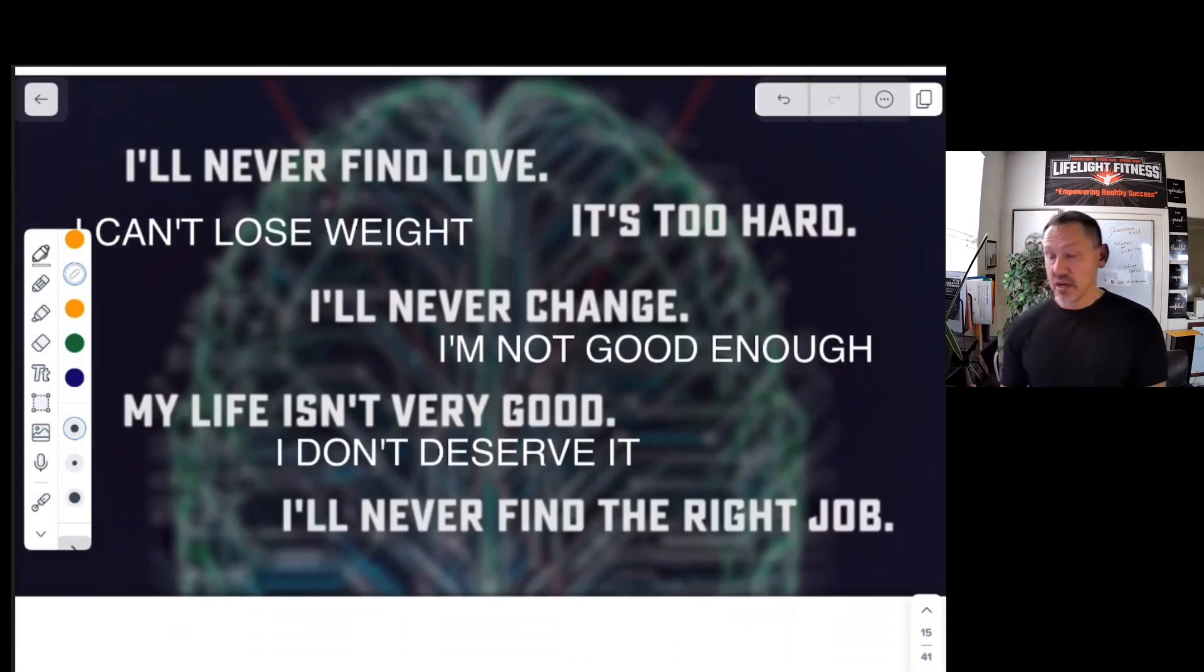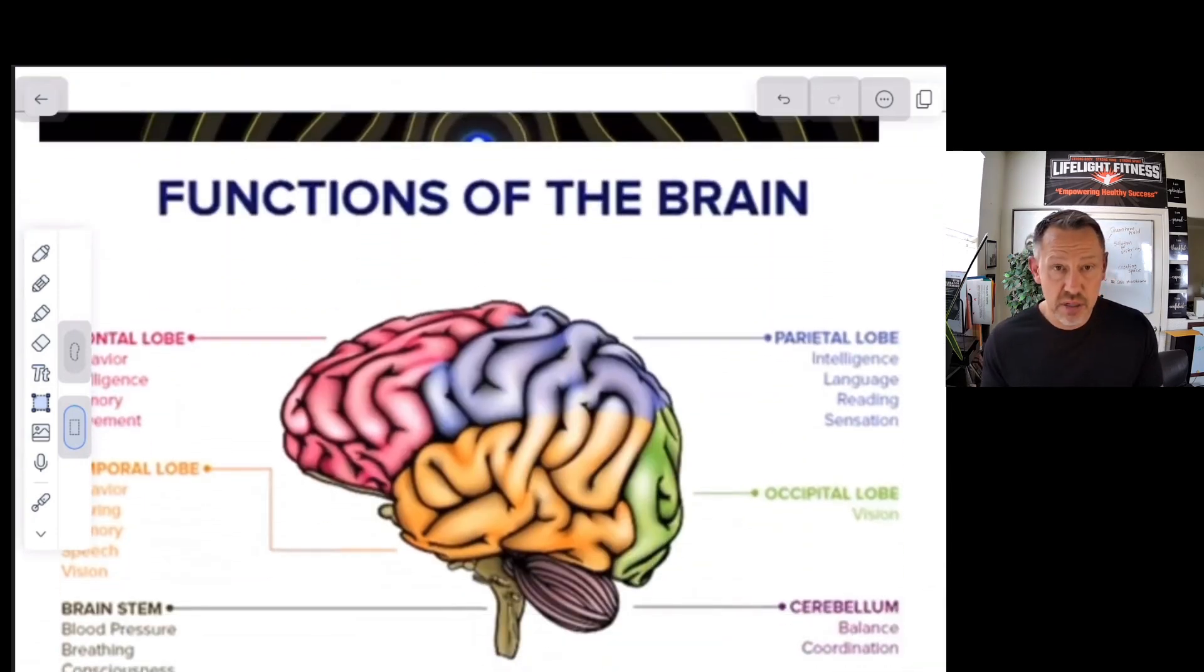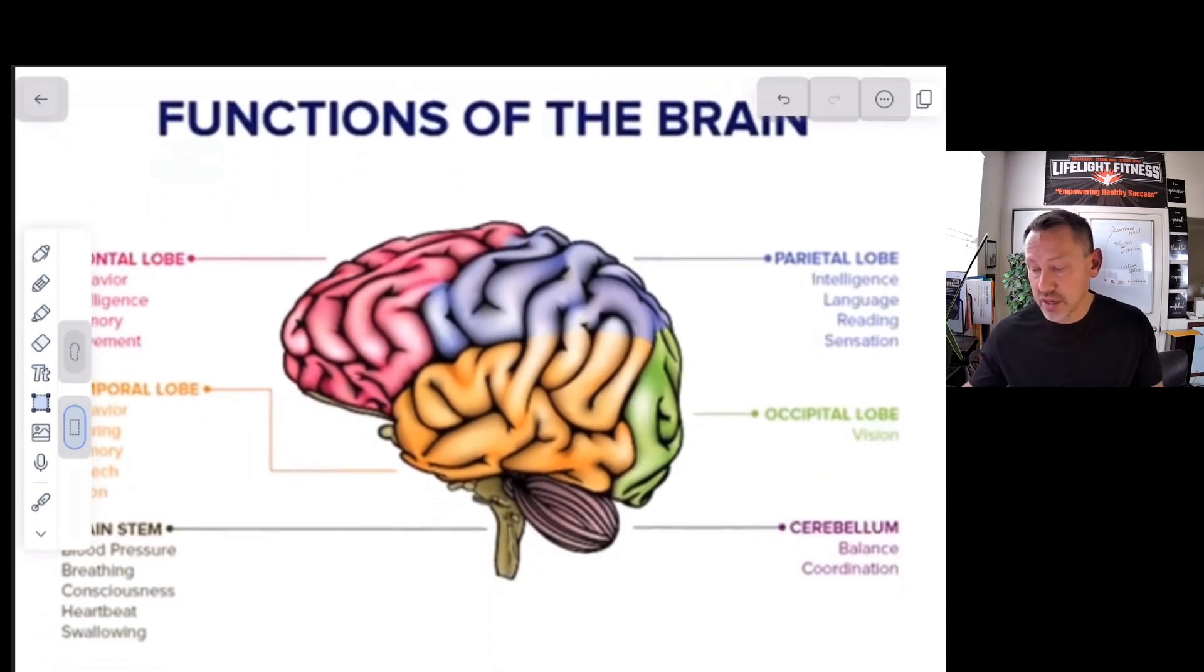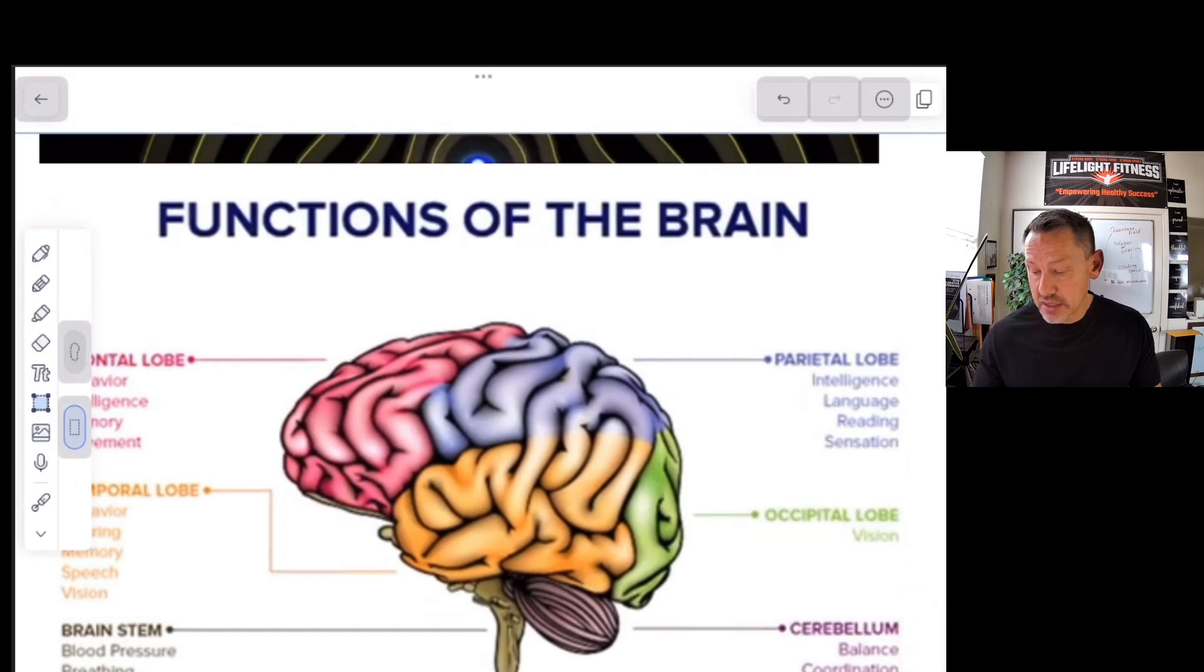Here are some common ones. I can't lose weight, it's too hard, I'll never change, I'm not good enough, I'll never find love, my life isn't very good, I don't deserve it, I'll never find the right job. If we're running those programs in our brain again and again, it's releasing the cortisol type hormones into our body again and again, and it's affecting our epigenetics. This is where it gets interesting. Your brain is an organ just like your heart, just like your arm.